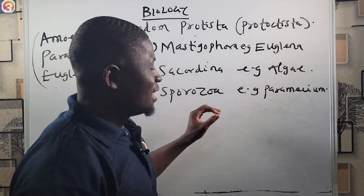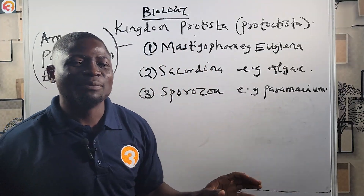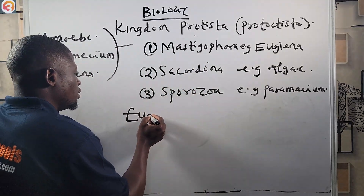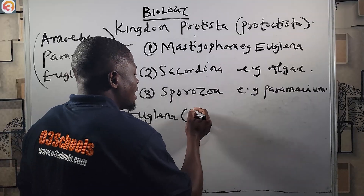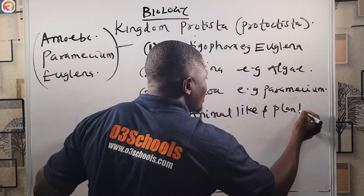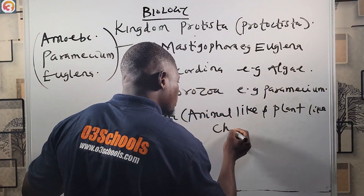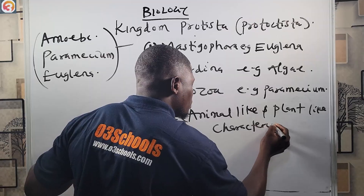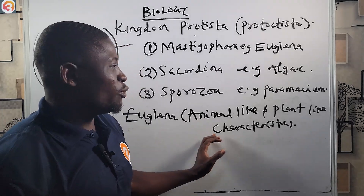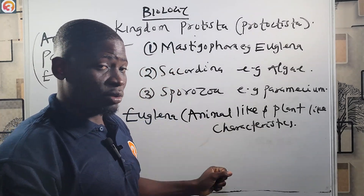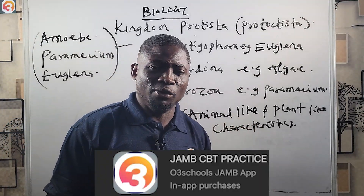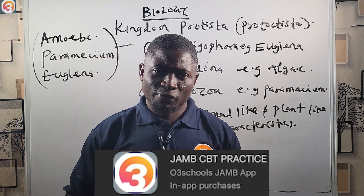Euglena is unique — it is the only protist that has both animal-like and plant-like characteristics. We will look at those characteristics in more detail soon.